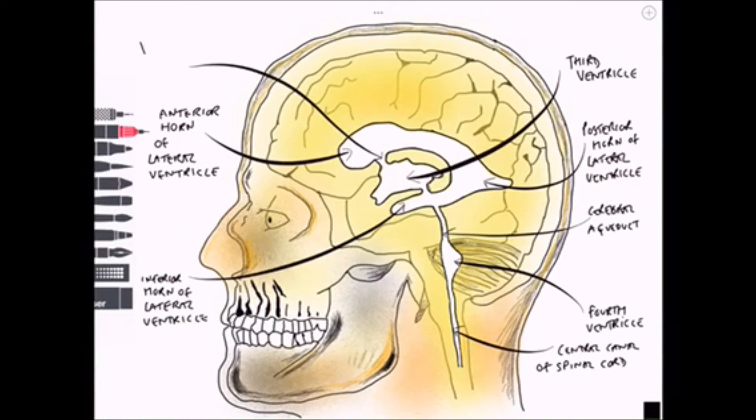Joining the lateral ventricle to the third ventricle is a structure known as the intraventricular foramen. This is sometimes known as the foramen of Monro.